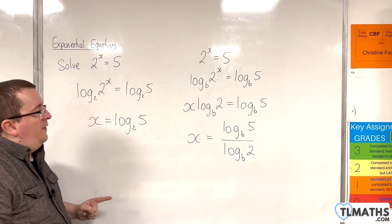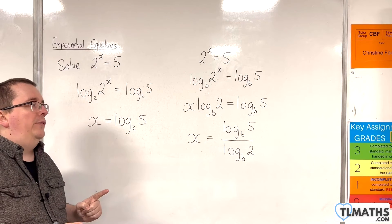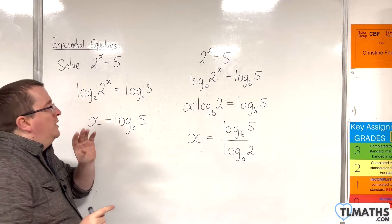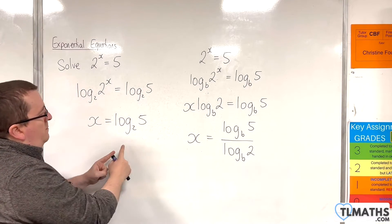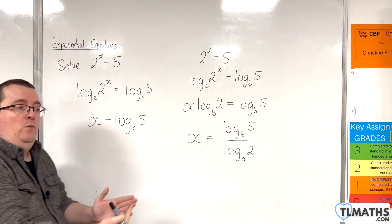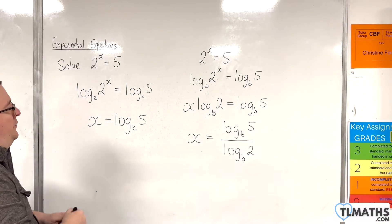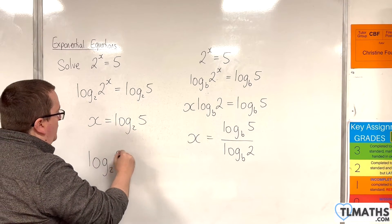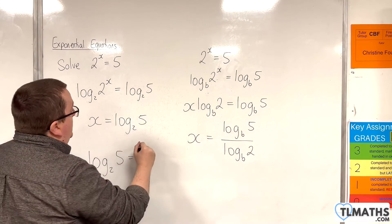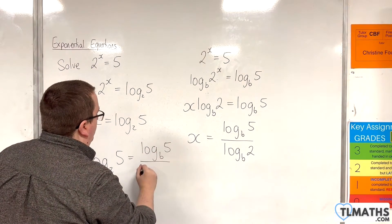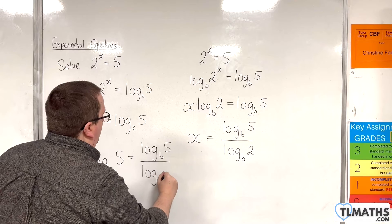Now, the point of this is that actually that gives us a nifty way of converting a logarithm into any logarithmic base that we want. So, what we're saying here is that log base 2 of 5 is the same thing as log base b of 5 over log base b of 2.